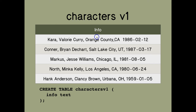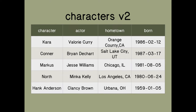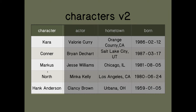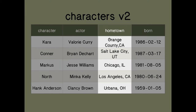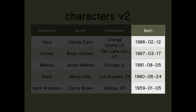We might think, well, maybe there's a better way. We could divide it up somehow semantically — this first little bit seems to be the character name, the second bit here, Valerie Curry, is the voice actor, this is the hometown, and so on. So we might have columns for that sort of information.